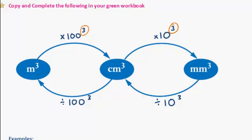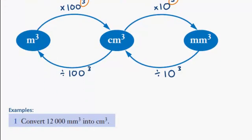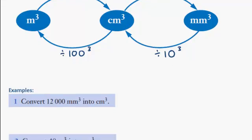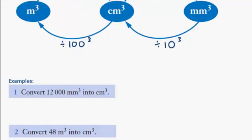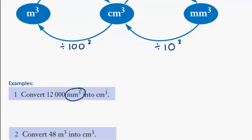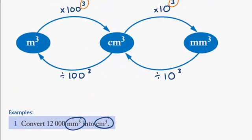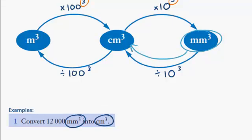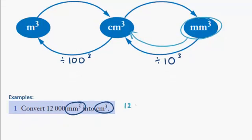Let's use that in two examples below. So our first example says convert 12,000 millimeters cubed into centimeters cubed. So millimeters cubed to centimeters cubed. In our diagram, what I'm looking at is millimeters to centimeters. So I'm following this path along the bottom here. So what do I need to do? I need to take my measurement, which was 12,000. And I need to divide it by 10 cubed.